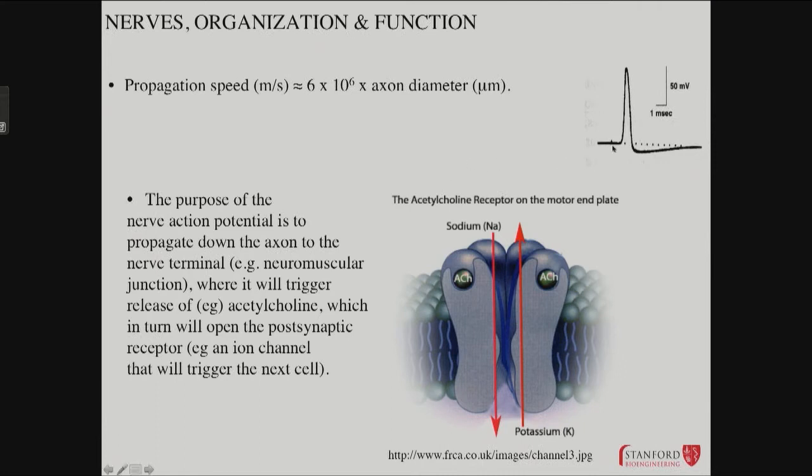But what is an action potential? Well, it looks like this. It's a little blip that goes up, undershoots, and then returns back to normal. It lasts for about a millisecond and is about 100 millivolts in amplitude.